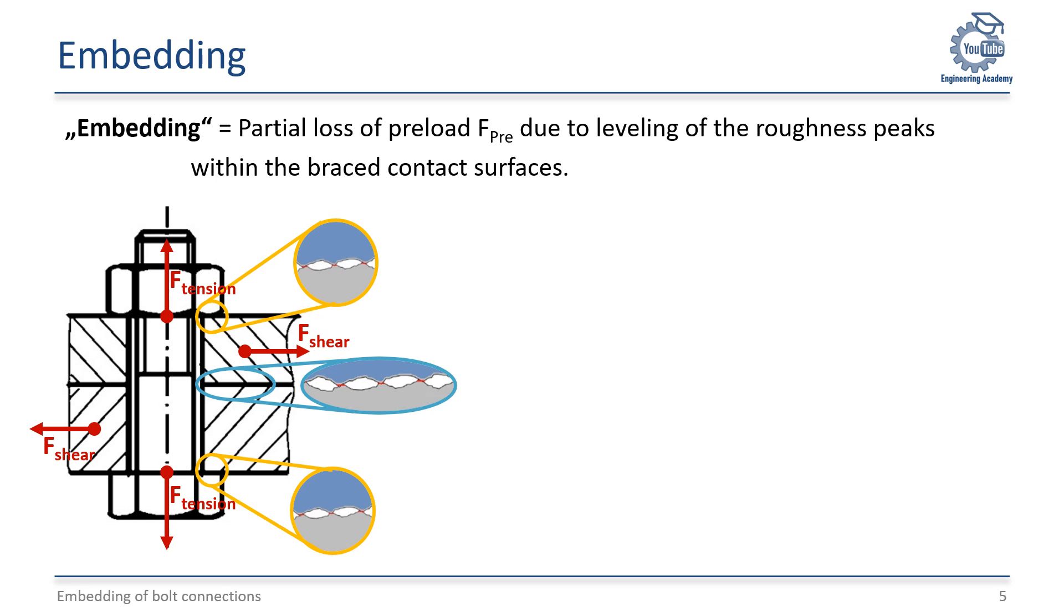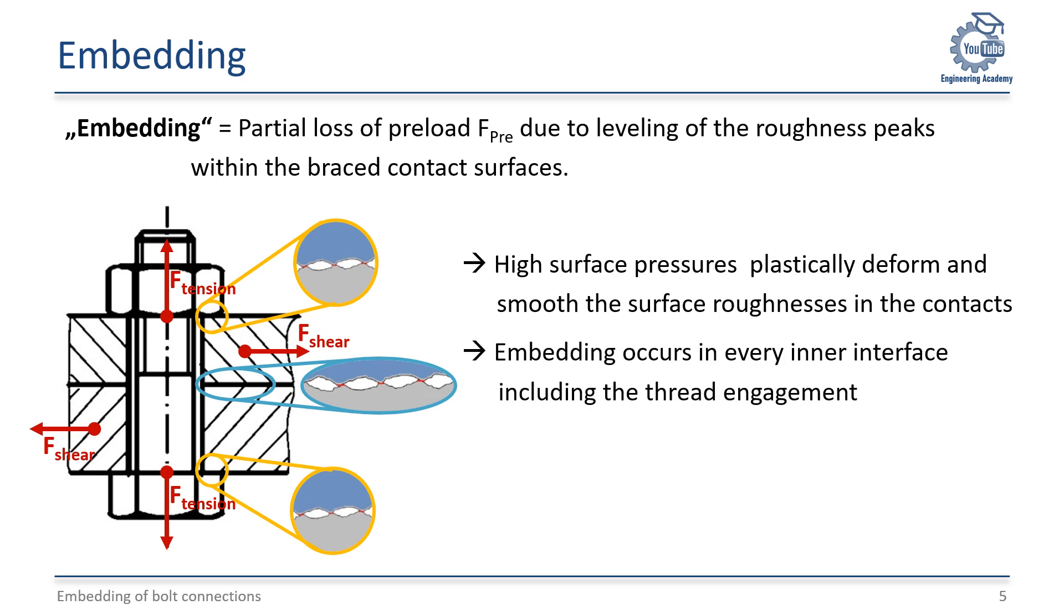When the bolted connection is correctly tightened, for example to 90% of the bolt's yield strength, the preload force generates high surface pressures in the contact areas, which plastically deform and smooth the surface roughness peaks present there. This flattening of the roughness peaks occurs in every inner interface, including the bolt head and nut bearing surface and the thread engagement.